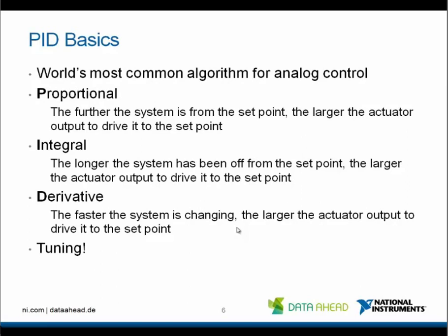The proportional part means that the further the system is from the set point, the larger the actuator output to drive it to the set point. The integral part means that the longer the system has been off from the set point, the larger the actuator output. And derivative means that the faster the system is changing, the larger the actuator output to drive it to the set point.